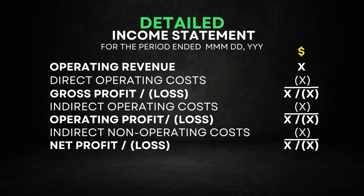At the top, we have operating revenue, which represents the income earned from conducting business. We subtract direct operating costs, such as the cost of sales, to calculate the gross profit or loss. Next, we deduct indirect operating costs or overheads to determine the operating profit or loss.